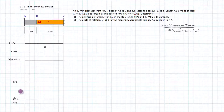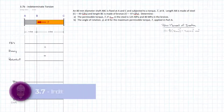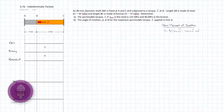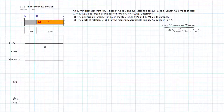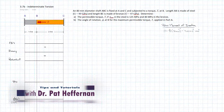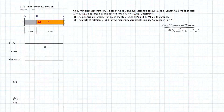We have another indeterminate torsion problem. In this case, we've added a touch of complexity. The bar constrained at A and C is steel on the first portion between A and B, and then it's bronze between B and C. That's going to add just a very minor wrinkle into how we solve this problem.